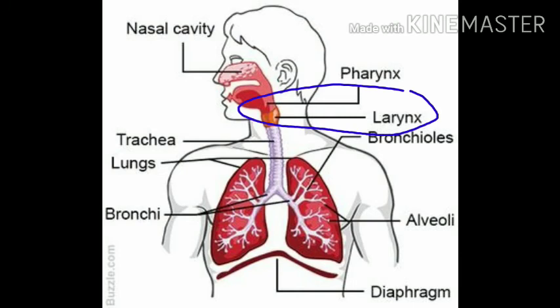The next organ involved in respiration is the larynx. As you can see in the diagram, the larynx is present exactly below the pharynx. At the entrance of the trachea there is a voice box, and this voice box is the larynx itself. It contains two ligament folds, also called vocal cords. The air expelled through these vocal cords vibrates and produces sound. The front opening of the windpipe is called the glottis, and it has a muscular flap called the epiglottis. The epiglottis closes the windpipe at the time of swallowing food. Incomplete closure of the epiglottis may lead to coughing.